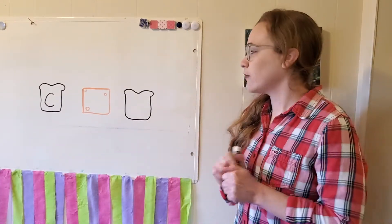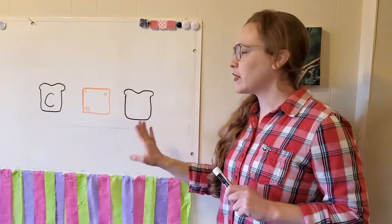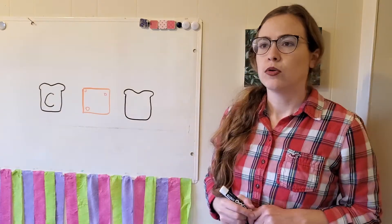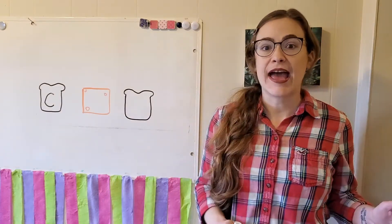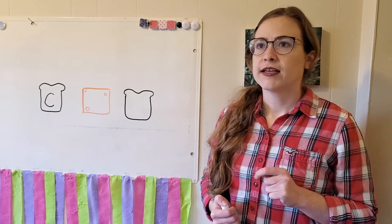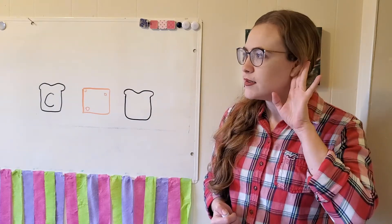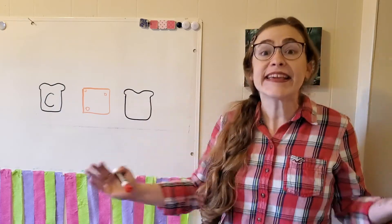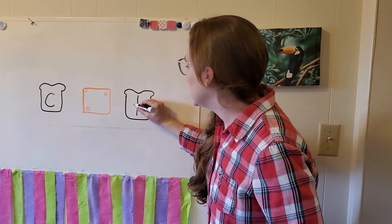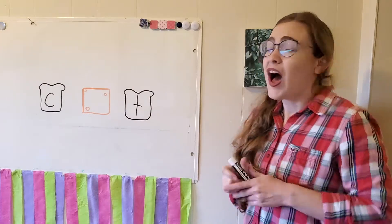Now, we have two more sounds to find, the middle and the end. Let's listen for the end sound. What sound do you hear at the end of the word? Cat. Cat. T. T. Yeah! At the end of cat, we hear T, which is the letter T.